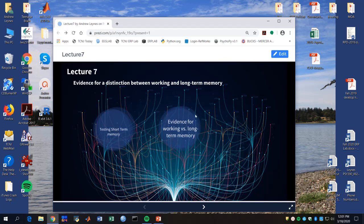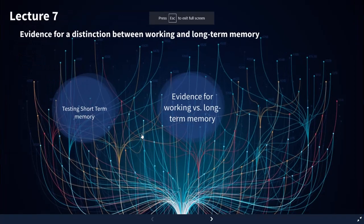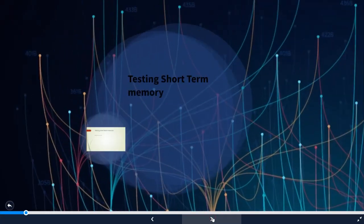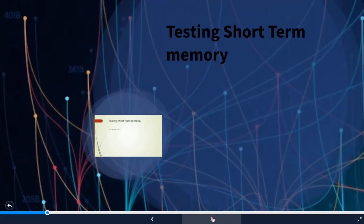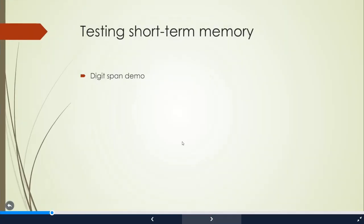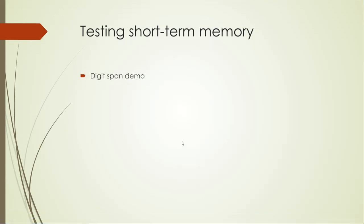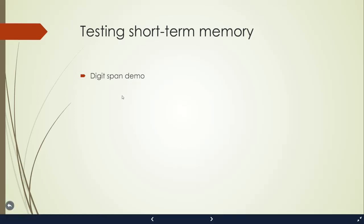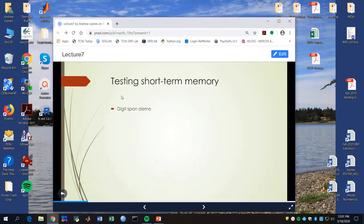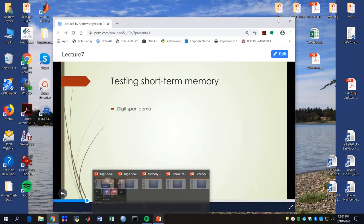We're going to first talk about how we actually test short-term memory and a little bit of the history for this. When we think about short-term memory, we're talking about a memory system that holds information for a brief period of time. Prototypically, the way this was tested was by using something called a digit span.